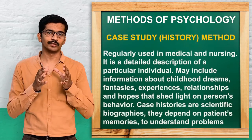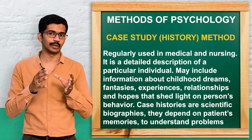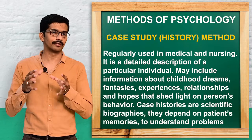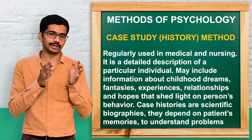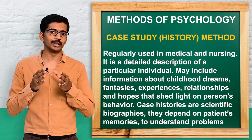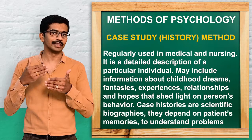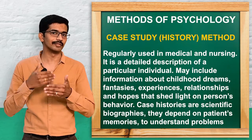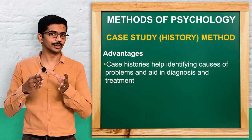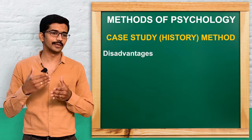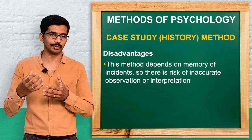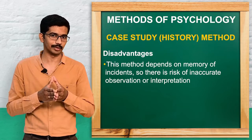The next method is the case study or case history method. This is one of the common methods used in healthcare settings by nurses, doctors, and others. It can be described as a scientific biography of an individual. We collect entire details of the patient starting from identification data and health history. In psychology, this may include their relationships, fantasies, or childhood habits and behavior. The advantage is that we get all details useful for diagnosing and treatment. The disadvantage is that it relies heavily on memory, so if the patient forgets something, we may not get correct information.